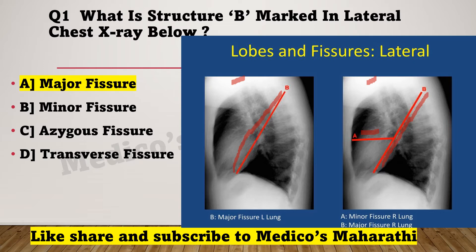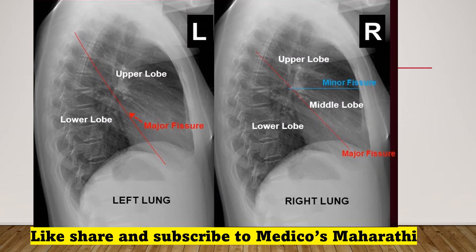The left lung has only two lobes: upper lobe and lower lobe. Looking at another image — it shows the left lung with upper lobe, lower lobe, and the major fissure. The right lung has major fissure, minor fissure, and three lobes: upper lobe, middle lobe, and lower lobe. So remember: left lung has two lobes (upper, lower), right lung has three (upper, middle, lower), and right lung has two fissures (minor and major) while left has only major fissure.